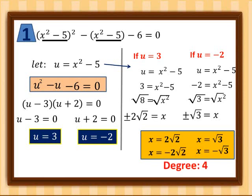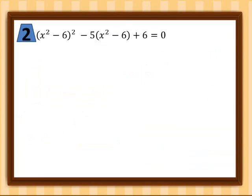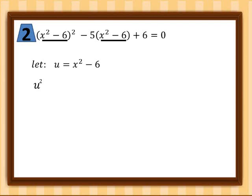We have four values of x because the degree of our first example is four, so it follows that we have four roots. Now for the second example: the quantity (x² - 6) squared minus five times the quantity (x² - 6) plus six equals zero. Using the same process, we let u equal the common expression x² - 6, and substitute it into our equation.